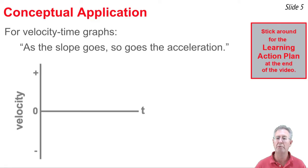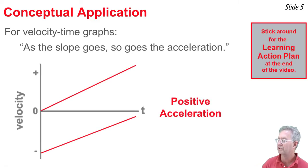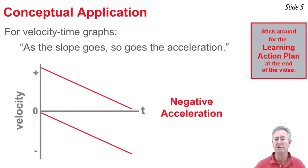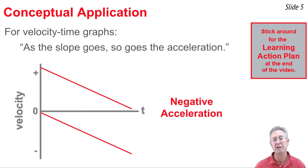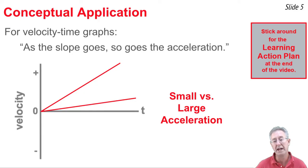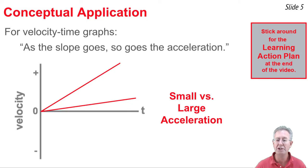Let's look at how we would apply this idea conceptually. If we look at two lines on the graph that both have positive slope, they also have positive acceleration. We often say: as the slope goes, so goes the acceleration. Positive slope means positive acceleration. If we look at two lines sloped in the negative direction, we would say these have negative acceleration. And then if we look at two lines that both have positive slope but one has more slope than the other, the one with the greater slope has the greater acceleration, and the one with the smaller slope has a smaller acceleration. Keep in mind: as the slope goes, so goes the acceleration on velocity-time graphs.